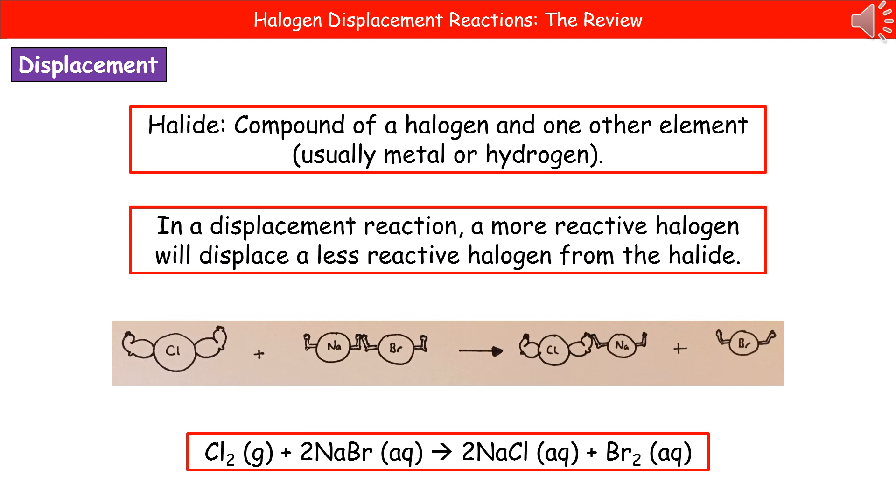Welcome to our review on halogen displacement reactions. So, quick recap for us first of all, when we're talking about a halide, that's the compound of a halogen and one other element, which is usually a metal or hydrogen.